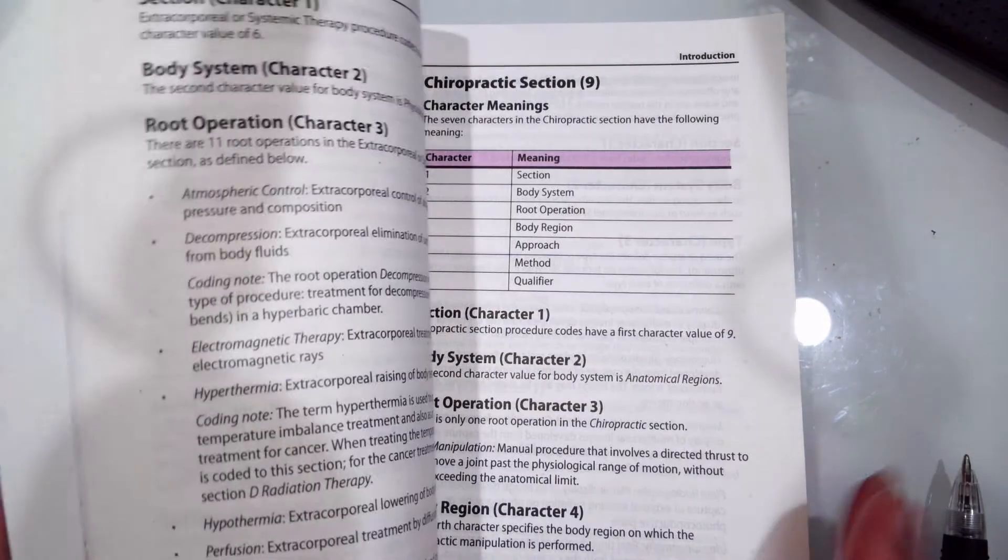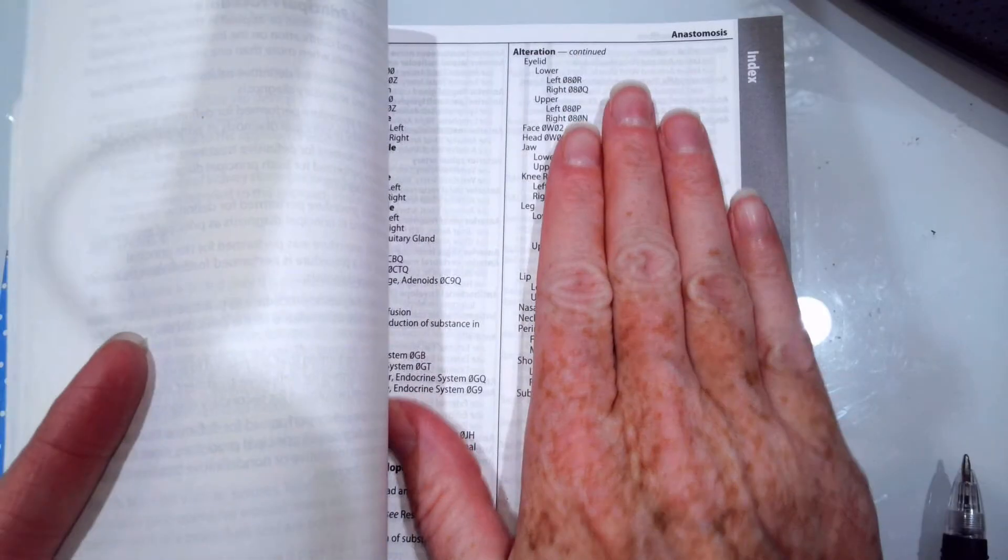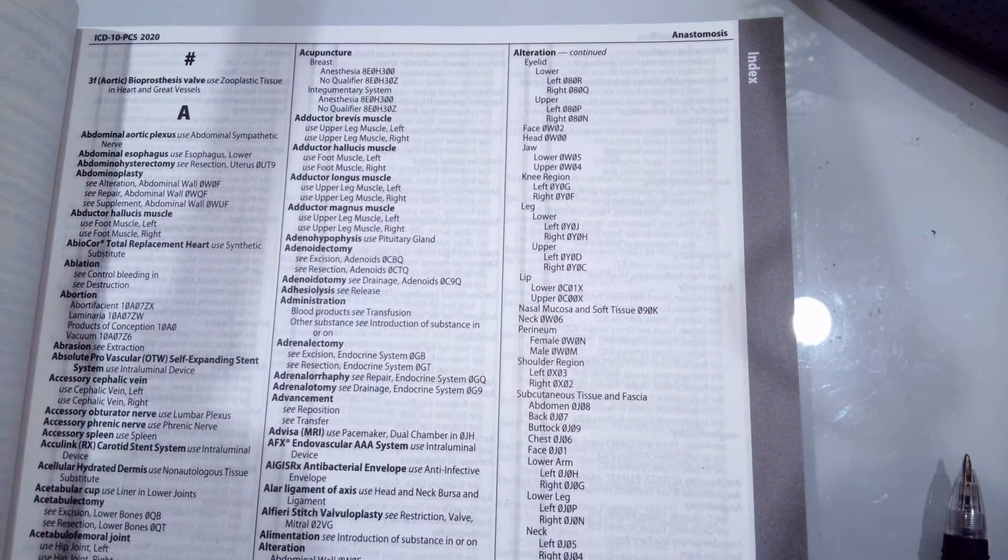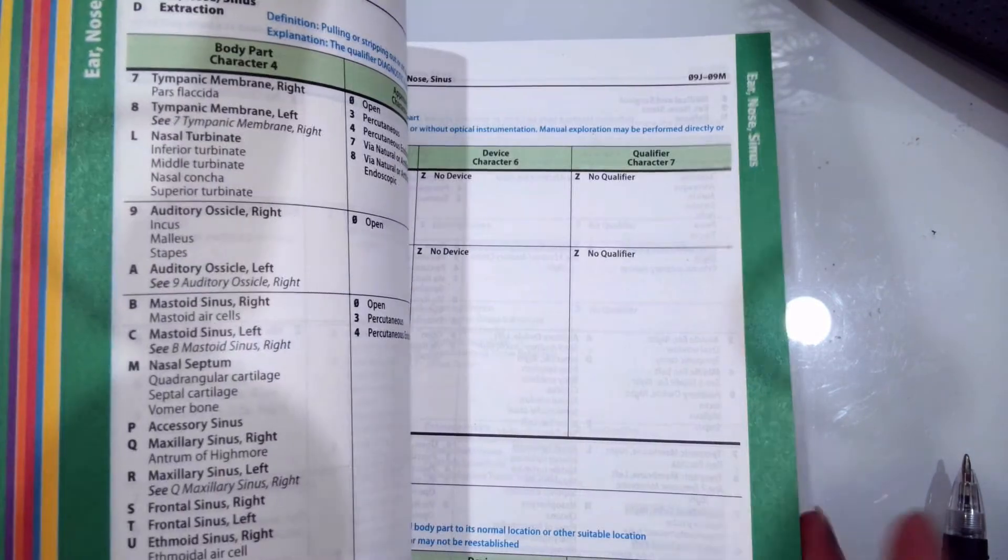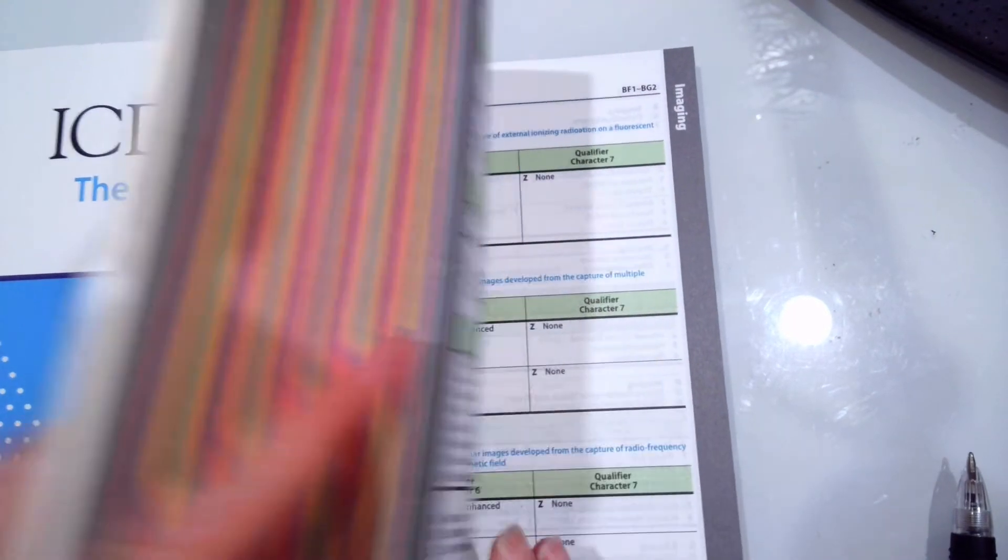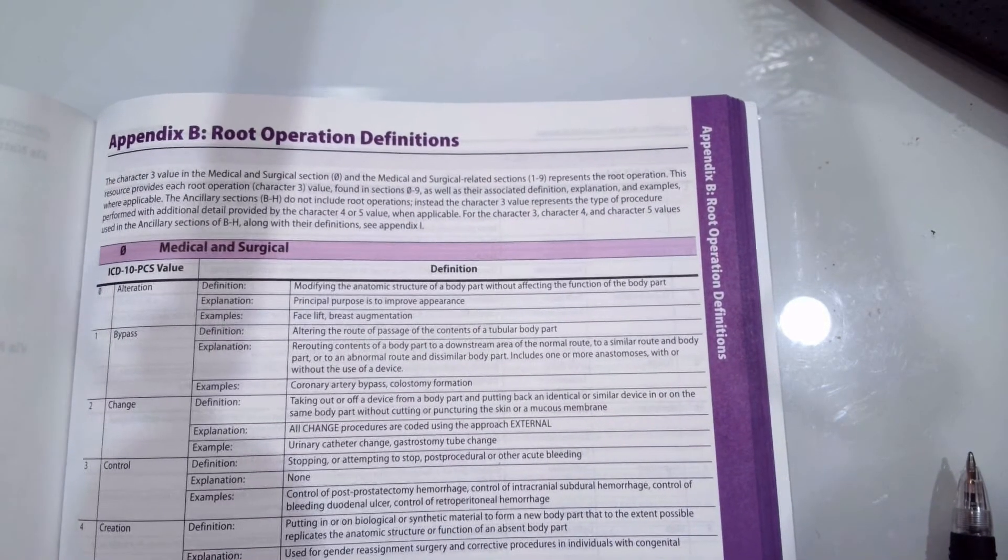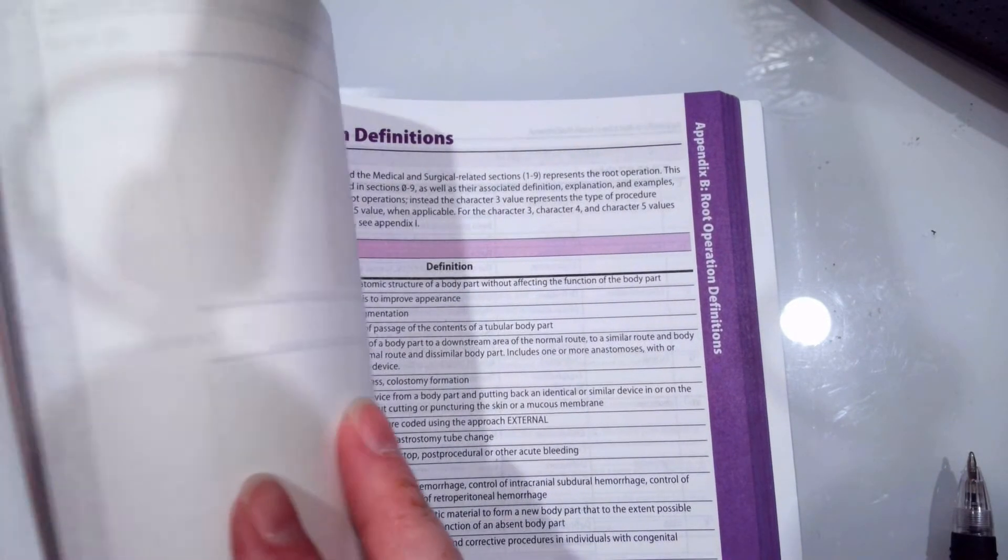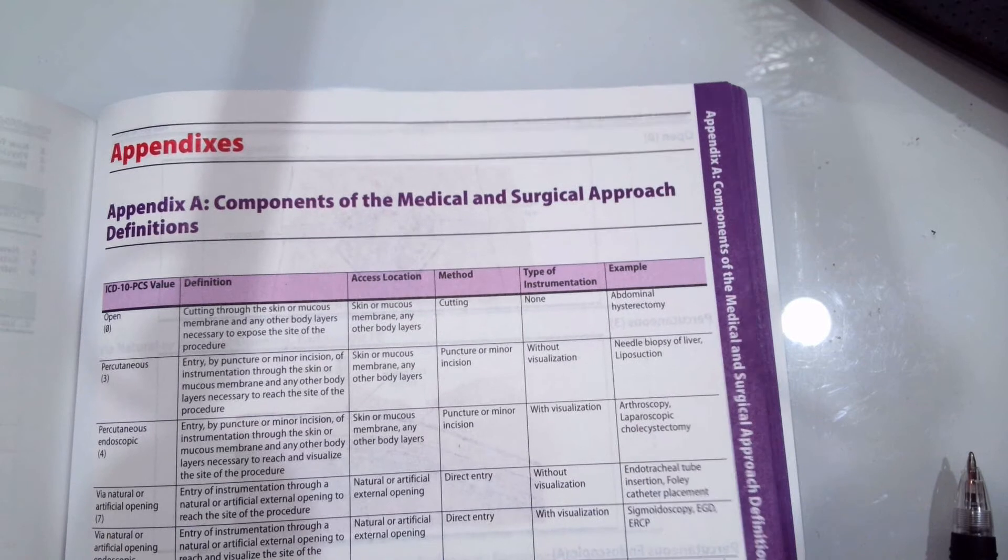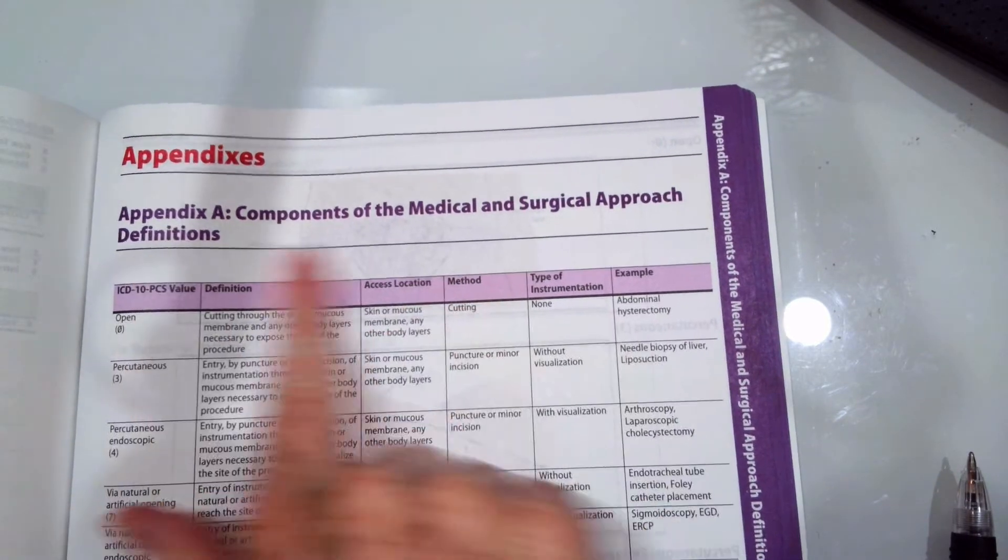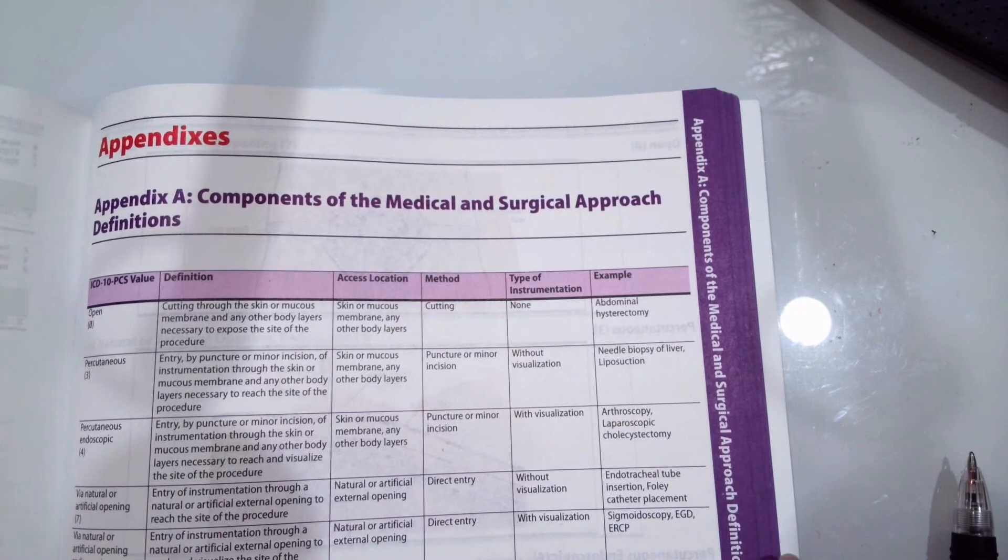For the first two, we'll go through together. For the third one, I would like you to pause the video after I say the scenario, try to find the PCS code yourself, and then review the seven-character answer to make sure your code matches. To start, remember that we always look up our root operation in the index, find our body parts, then go to our table, which is in the table section. If you need to review the root operations, go back to Appendix B to the root operation definitions. If you're not sure of the different approaches for your fifth character in your seven-character code, Appendix A has the surgical approaches.